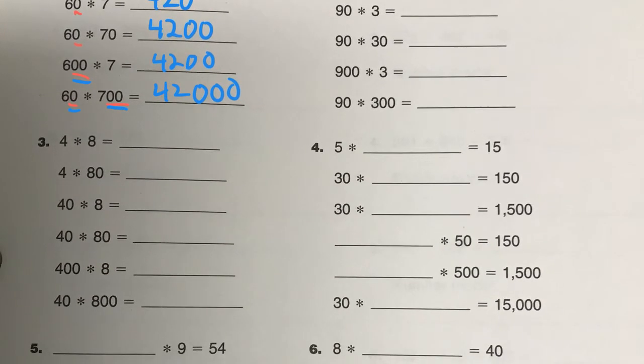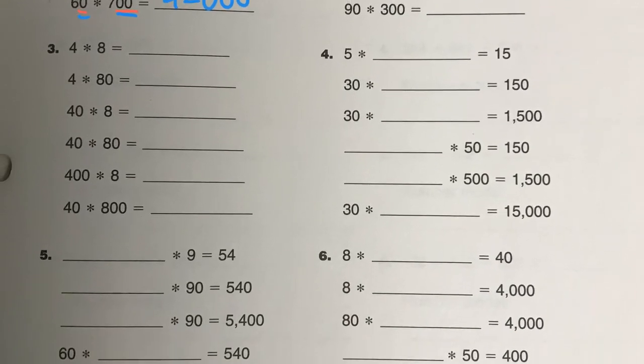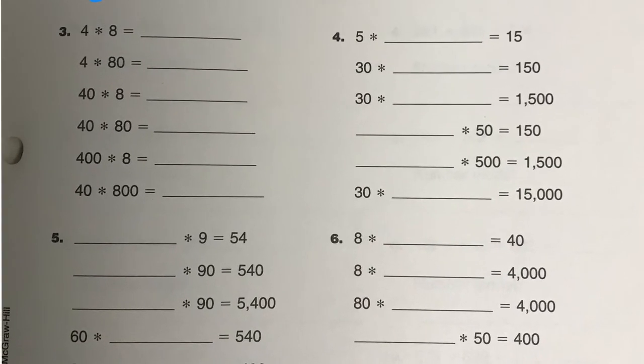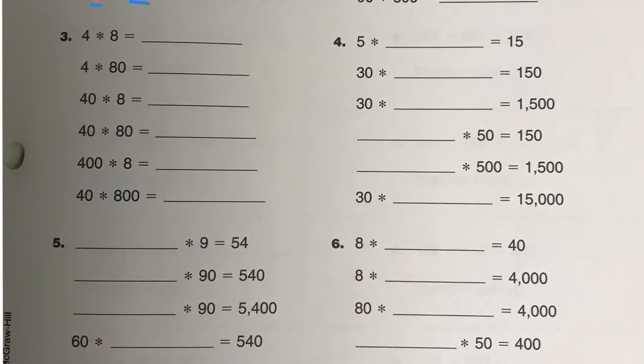Just be aware here for number 4, you have to figure out 5 times what is 15. And that would be 5 times what is 150. Well, that would be 5. You already had the 1, 0 on the end. 30 times what is 1,500.